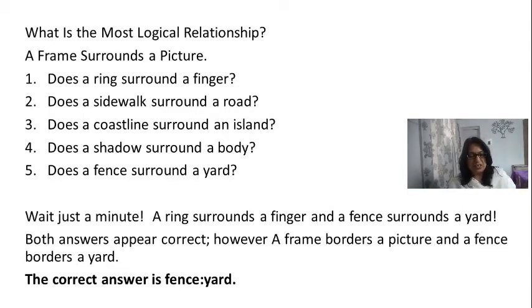Now let's have a look at the other options here. There are two options that actually are confusing: a ring surrounds a finger, yes, and a fence also surrounds a yard, doesn't it? So both these appear to be correct. However, a frame borders a picture and a fence borders a yard, so the correct answer would be fence is to yard.